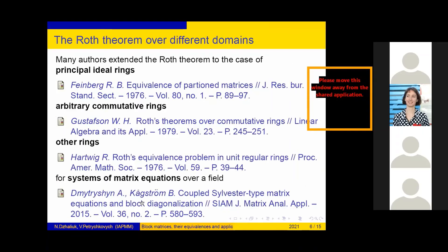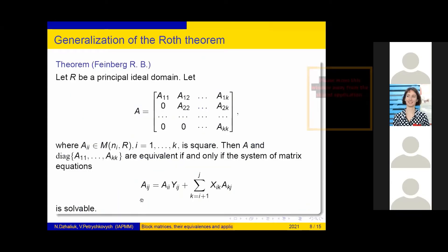Many authors extended the case to principal ideal rings, arbitrary commutative rings, other rings, and for systems of matrix equations over fields. Feinberg generalized the Roth result for block matrices with an arbitrary number of blocks K.